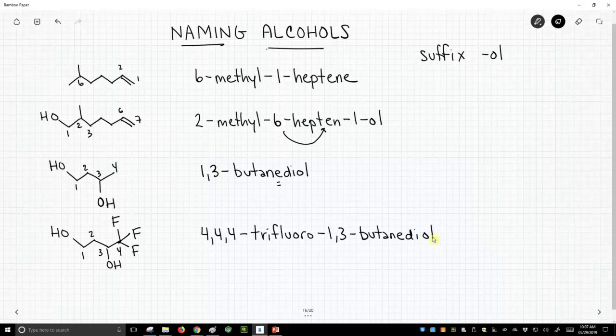Note to separate our numbers, we use commas. To separate our letters and numbers, we use dashes or hyphens. So this is a simple application of alcohols. They're just a higher priority group. So we use the suffix -ol to indicate that we have an alcohol in the name, and then we apply the same rules as always.